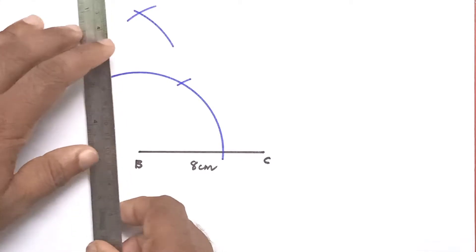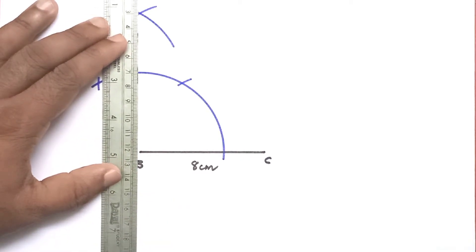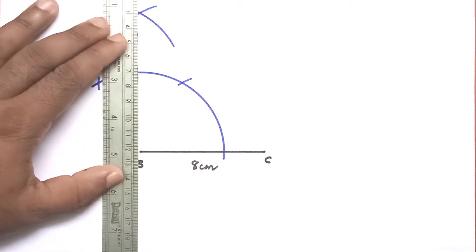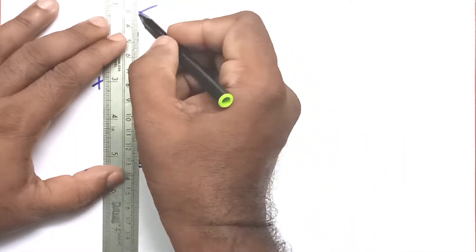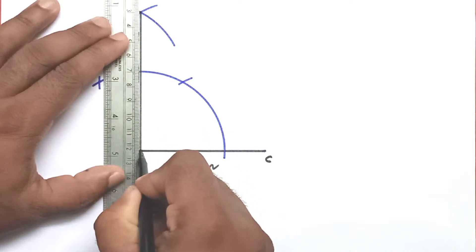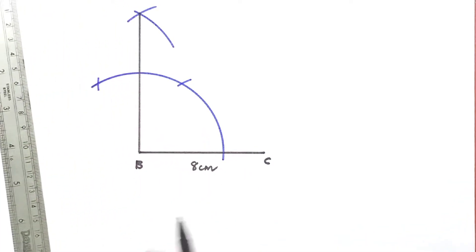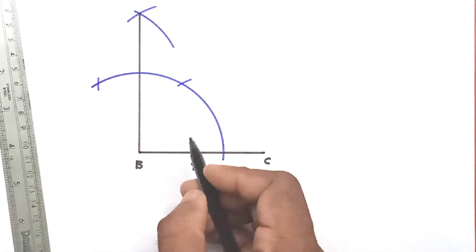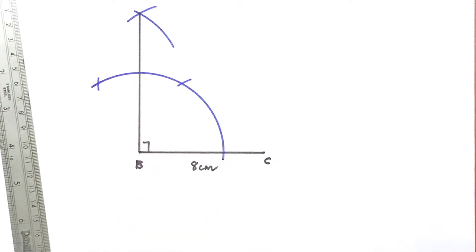Join the point of intersection. So angle B is 90 degrees.